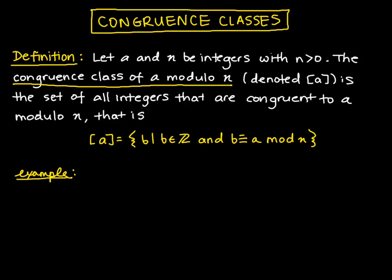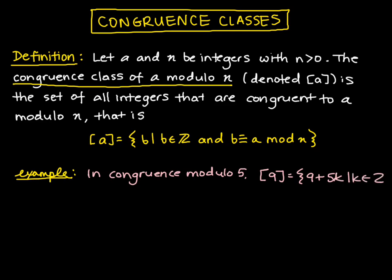In congruence modulo 5, we have that the congruence class of 9 is equal to the set of 9 plus 5k, such that k is an integer. How does this match what we want? Well, the congruence class of 9 is supposed to be the set of all integers that are congruent to 9 mod 5. So we write the set of all b such that b is congruent to 9 mod 5.